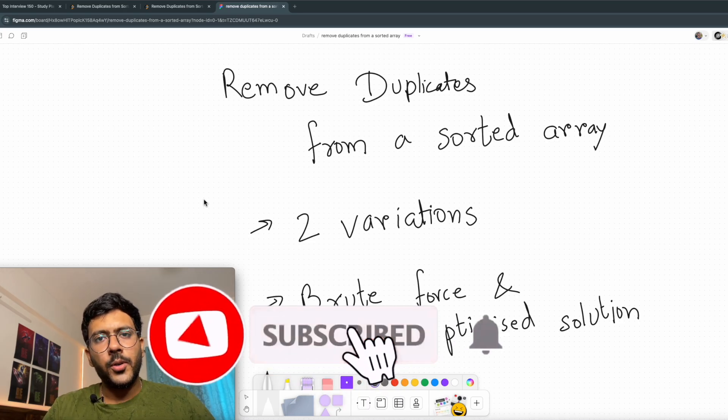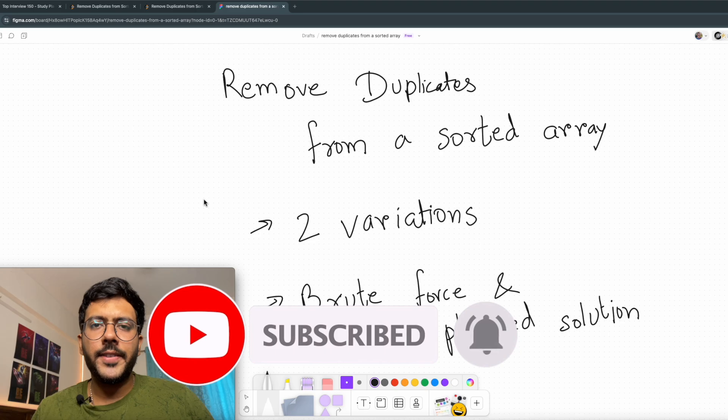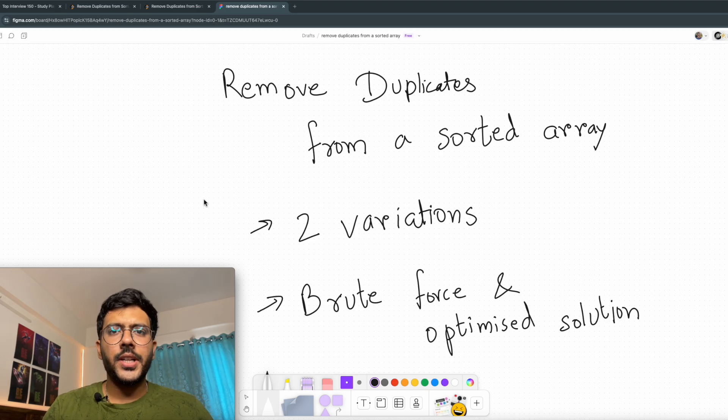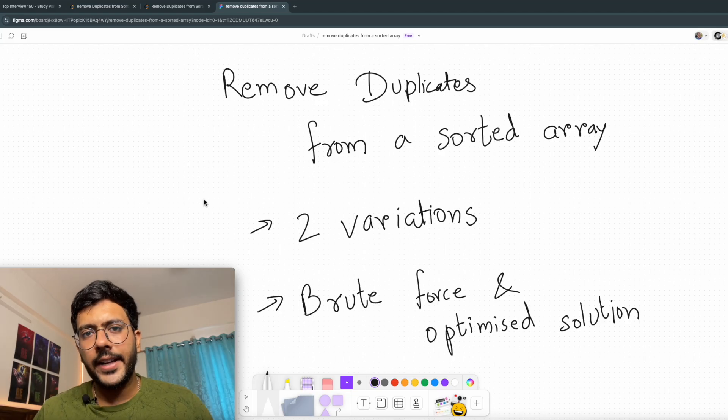Hello everyone, I am Gaurav and welcome to my channel Code with GD. By the end of this video, you will be able to solve the famous problem, remove duplicates from a sorted array. This question has two variations and I will discuss the solution of both the variations. I will also tell you the brute force way to solve this problem and the optimized way, and at the end, I will code for the optimized solution. So let's dive right in.